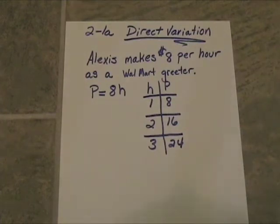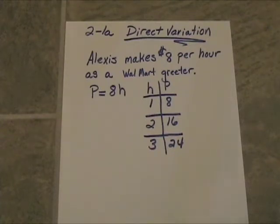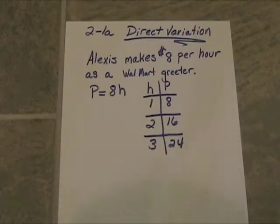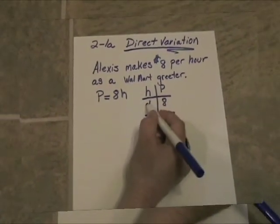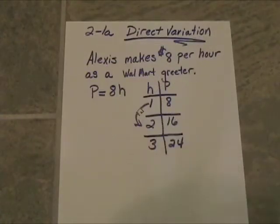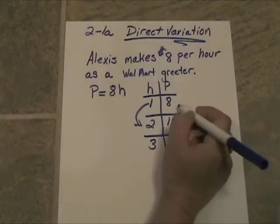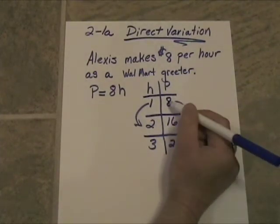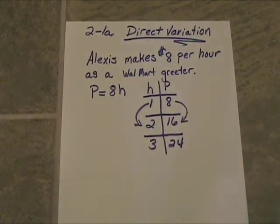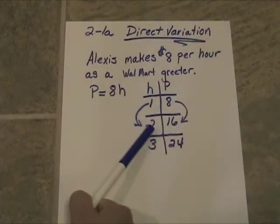Now, this direct variation says that as one variable changes, the other variable is going to change in the same way. So for example, if we double the number of hours — if we double one we'll get two — direct variation means since the hours doubled, the pay is going to double. And indeed it does. It went from 8 to 16. That's called a direct variation.